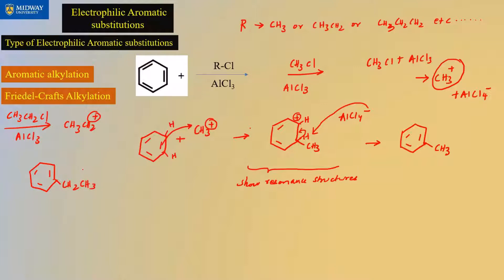Basically, whatever your R value is, that gets added to the ring. If it was CH3, then CH3 gets added. If it's CH3CH2, then CH2CH3 gets added to the ring. The most important thing is I want you to show the resonance structures for this reaction.